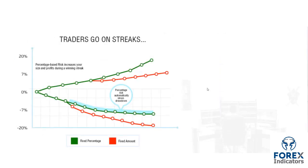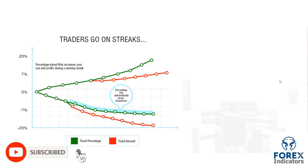Traders tend to go on streaks. Whether you go on a 9-trade win streak or a 9 to 12-trade losing streak, the green line — fixed percent of account — outperforms tremendously. The fixed dollar amount gains only about 6-7%, while the fixed percent is up about 17-18% — and that's just over nine trades. On losing streaks, the fixed percent model slows down your losses, while the fixed dollar amount continues to drop your account. In simulations, seven or eight out of ten scenarios show fixed percent performing better.